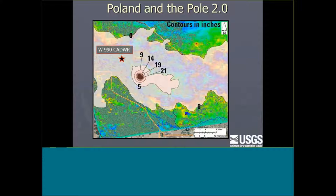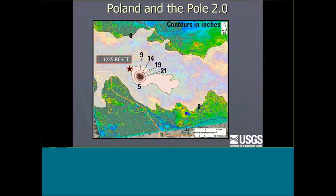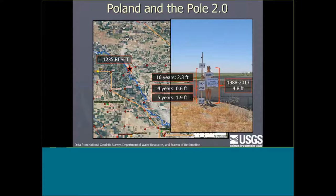I redid the polling-style photos at a few locations around the areas with the most measured subsidence. At the first location, between 1965 and 2003, there's about seven feet of subsidence. At a second location, between 1988 and 2004 — about 16 years — about 2.3 feet of subsidence occurred. During the next four years, almost half a foot. And the following five years saw roughly double that. We're seeing a rapid acceleration of subsidence in this area.